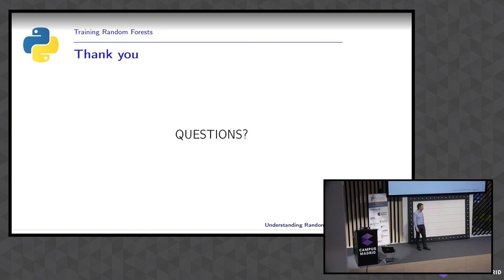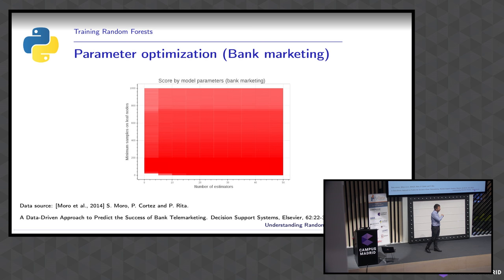That's it from my side, thank you very much. We have time for two short questions. Is the bank example dataset public? Yes, it's in the UCI repository — the University of California. They actually require you to include the reference if you use the dataset.